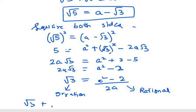Therefore, from this contradiction, we conclude that √3 + √5 must be an irrational number. That's all for question number 10. Thank you for watching.